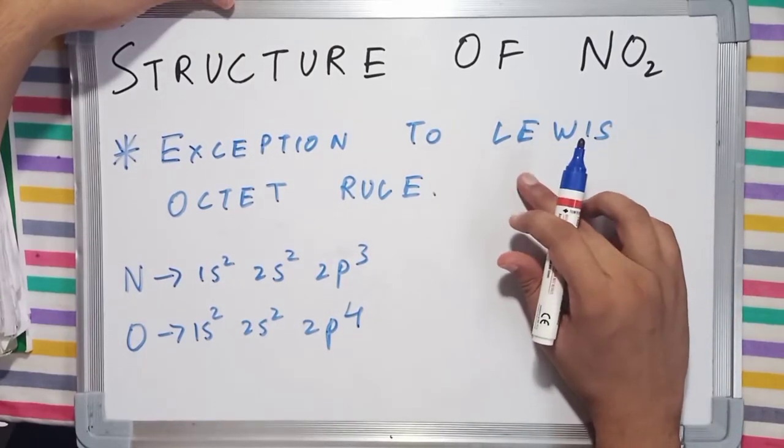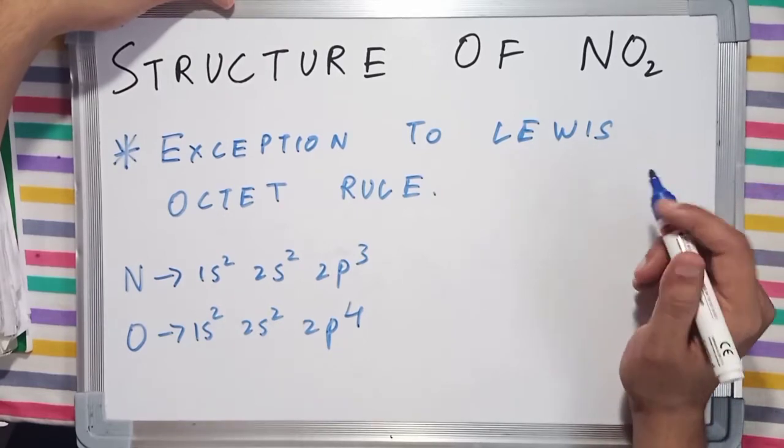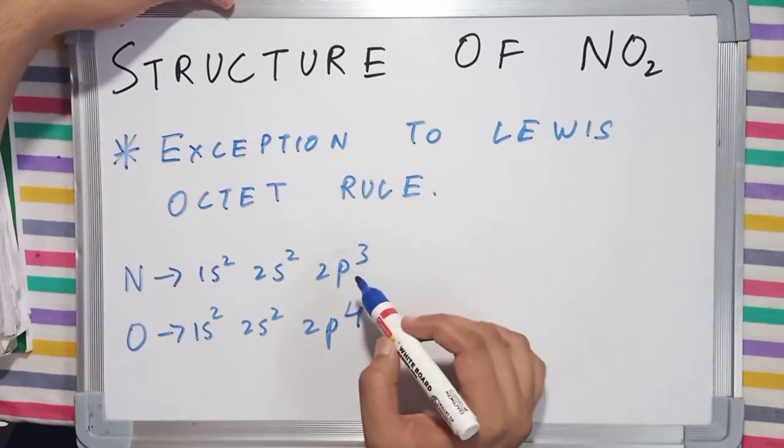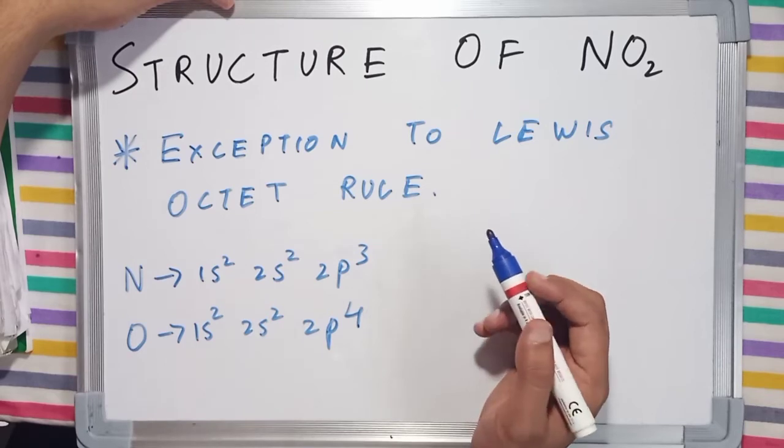This rule states that every atom in a molecule wants to complete its octet, which means it wants to have 8 electrons in its valence shell.